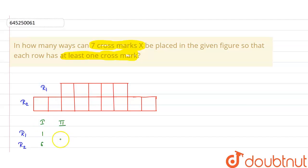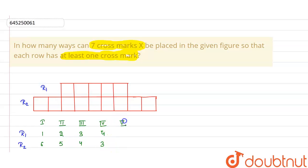Case 2: row one has two and row two has five cross marks. Case 3: row one has three and row two has four cross marks. Case 4: row one has four and row two has three cross marks. Case 5: row one has five cross marks and row two has two. We can't take further cases because row one has a maximum of five places.